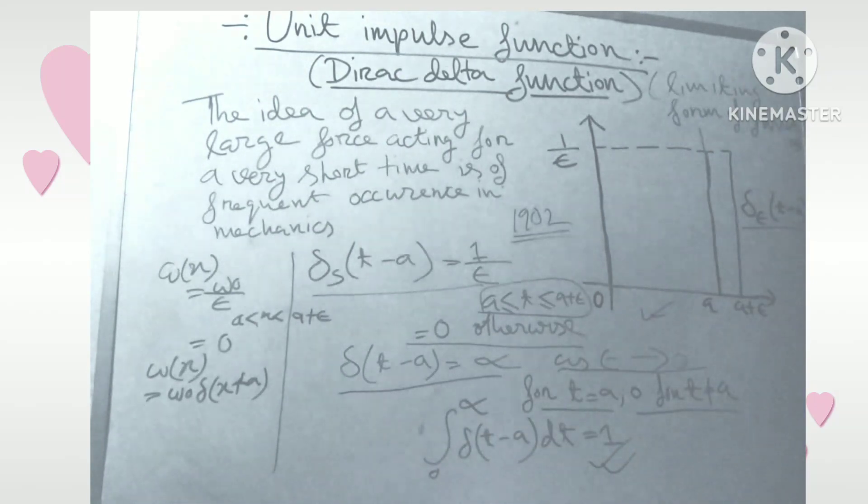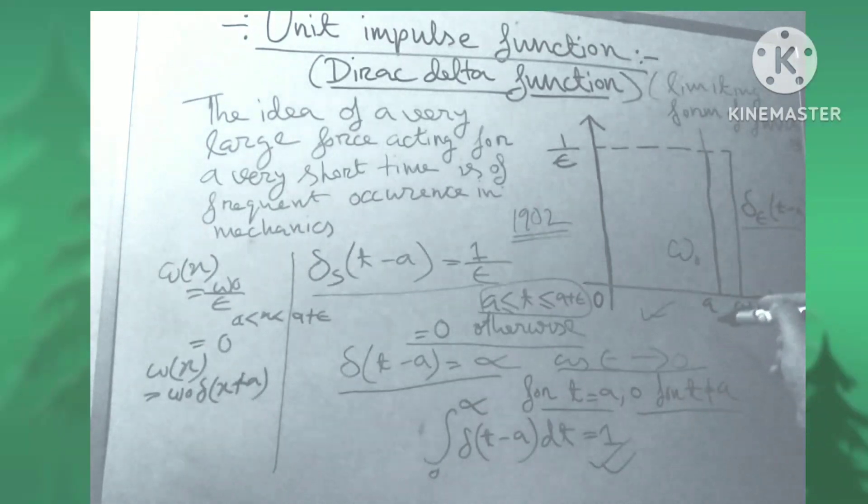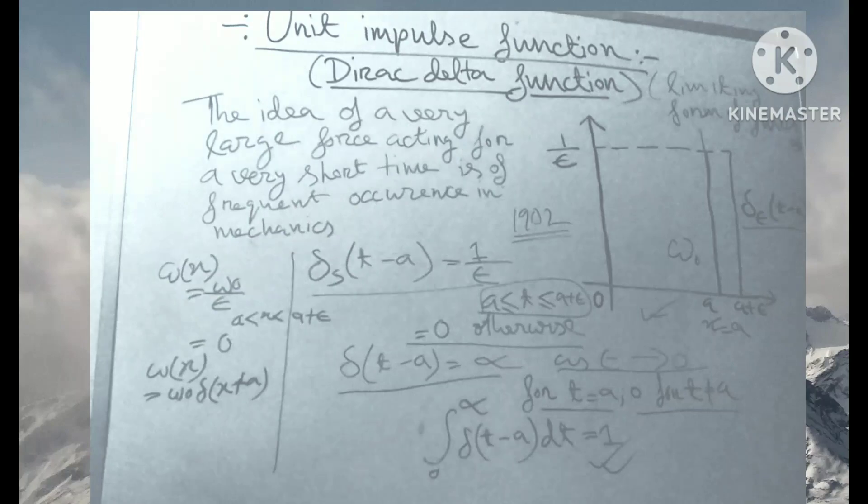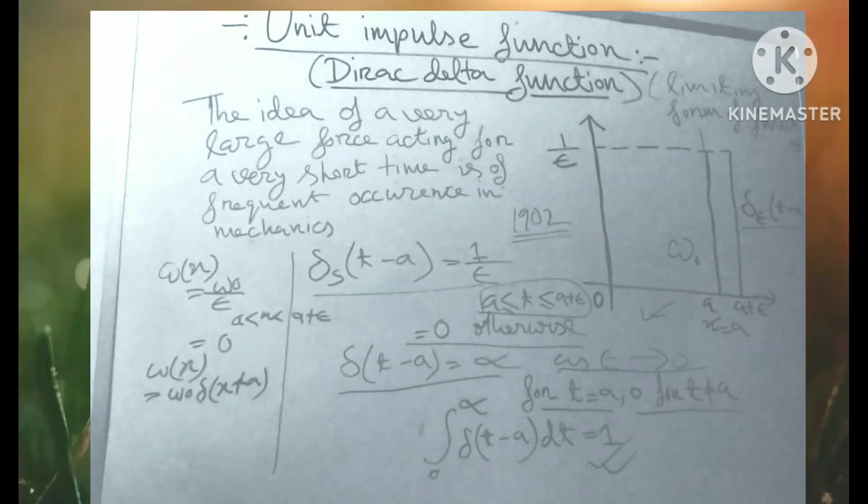The W0 acting at a point x equals a of a beam may be considered as the limiting case of a uniform loading W0 divided by epsilon per unit length over the portion of beam between x equals a and x equals a plus epsilon.